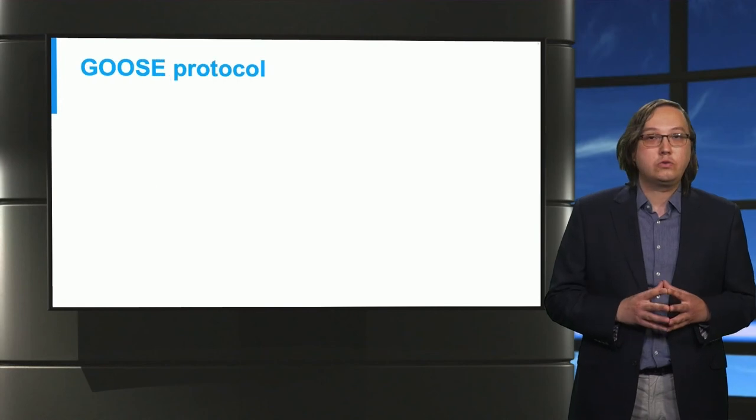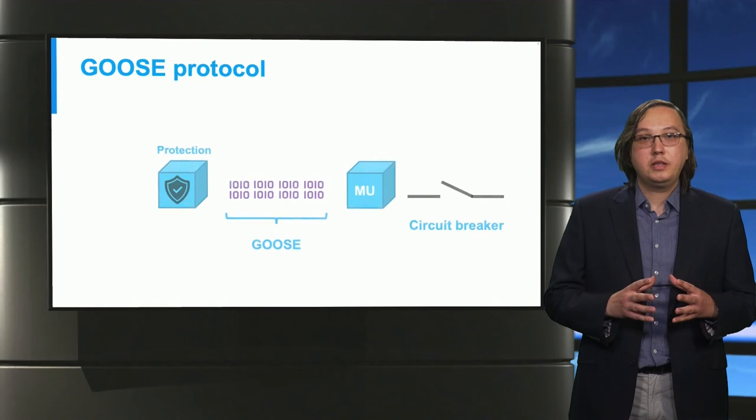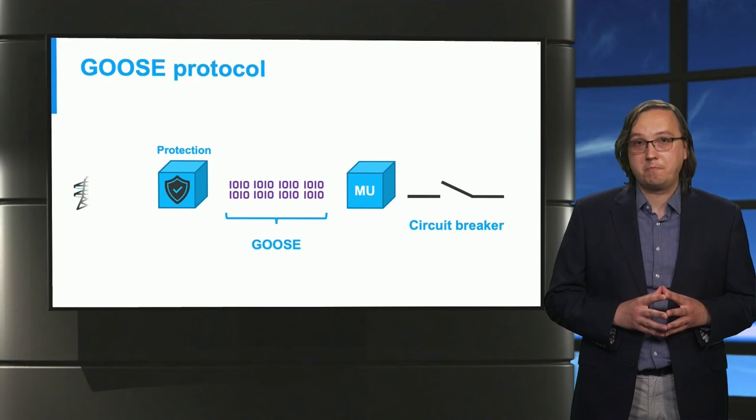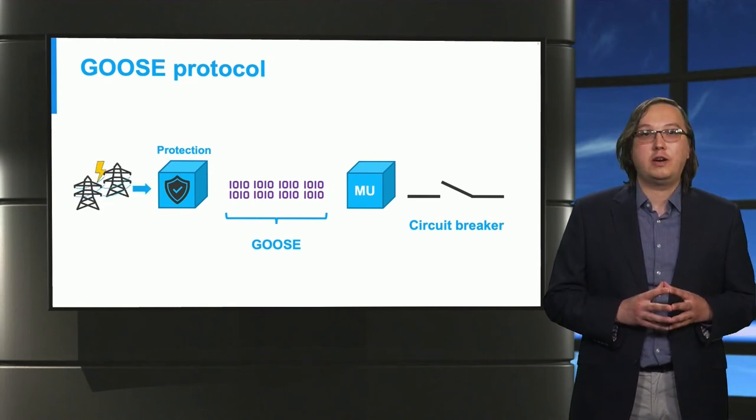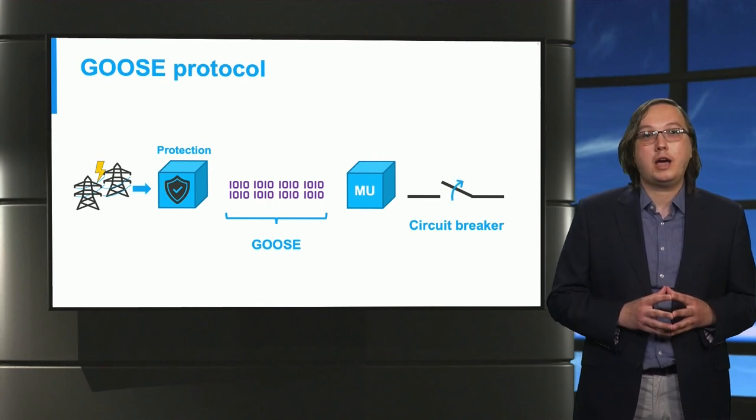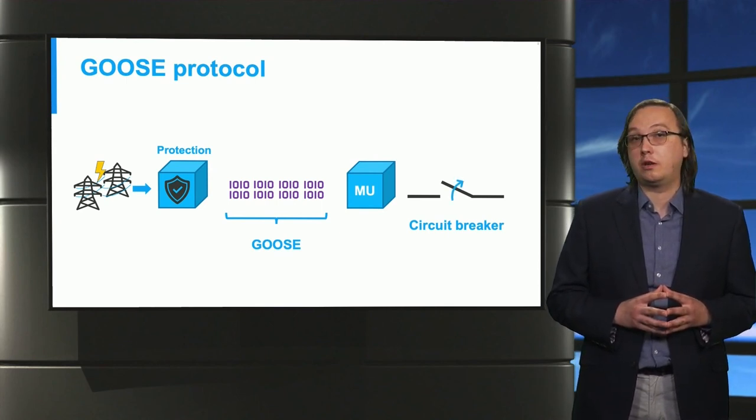Now let's have a look at the GOOSE protocol. Contrary to sample values, the GOOSE protocol is used for urgent messages. This message can be a trip command sent by the protection relays to the circuit breaker. GOOSE is very fast. After the intelligent electronic device has sensed the short circuit, the circuit breaker is opened by its actuator within 4 milliseconds to clear the fault.